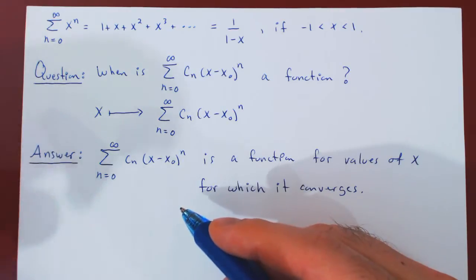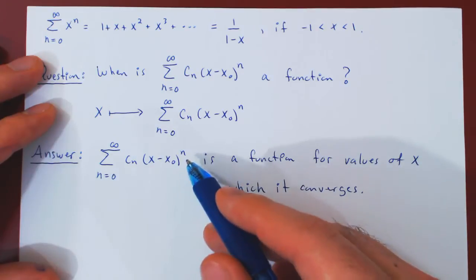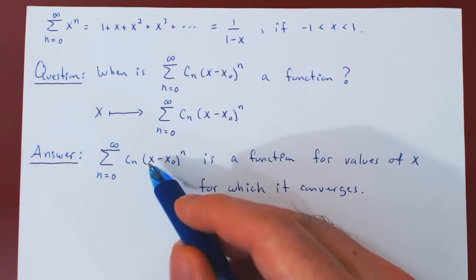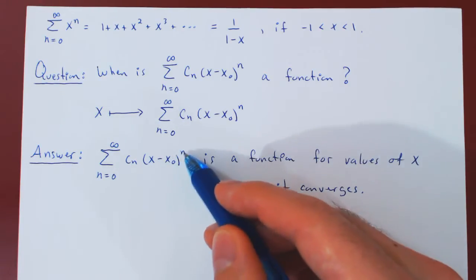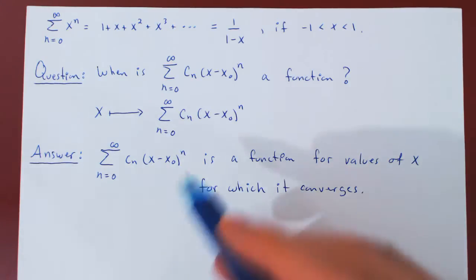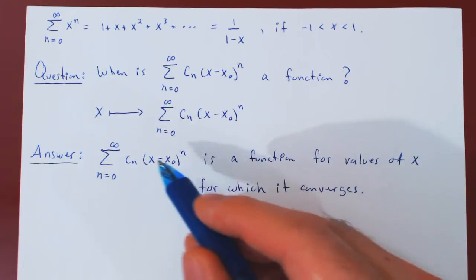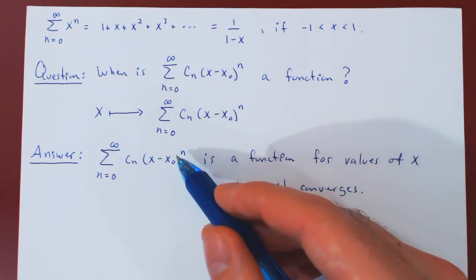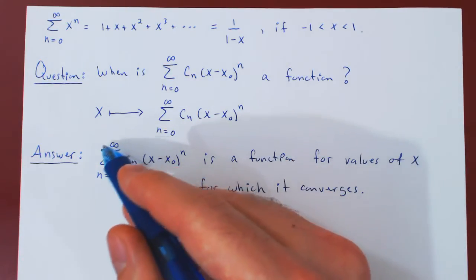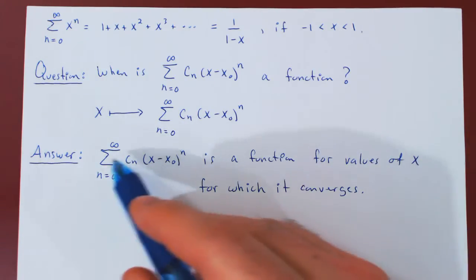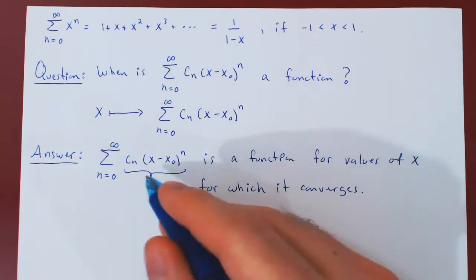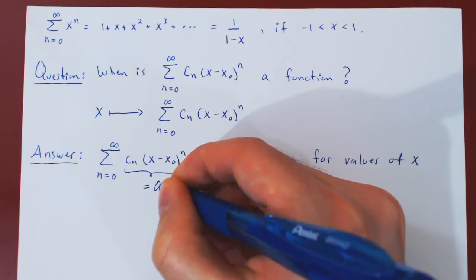Which test are we going to use to determine convergence or divergence of a power series? Regardless of what the coefficients of the power series may be, there will always be a term of the form x minus x₀ to the n. Because of this term raised to the nth power, this is exactly a case where one should use the ratio or root test. So for almost all power series, when finding the values of x for which it converges, we will use the ratio or the root test, applied to a_n, the entire sequence of terms being summed.